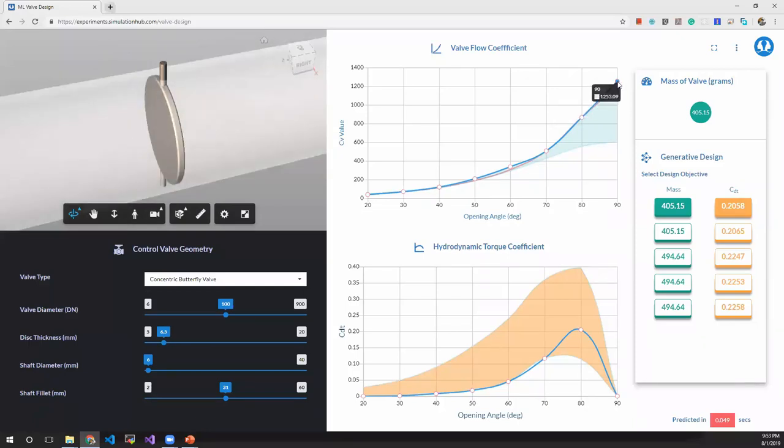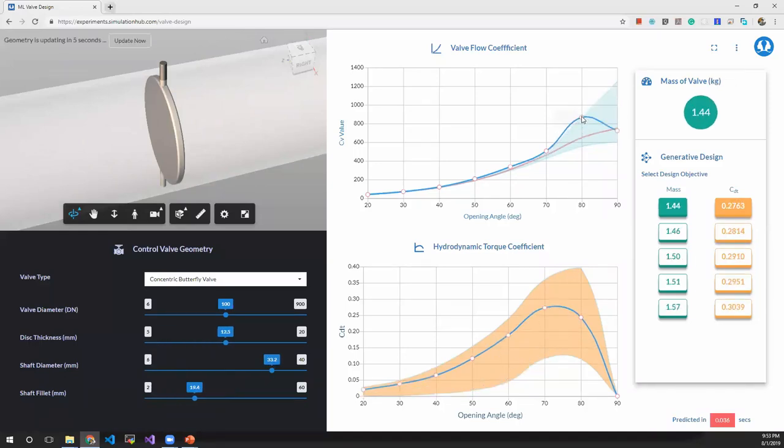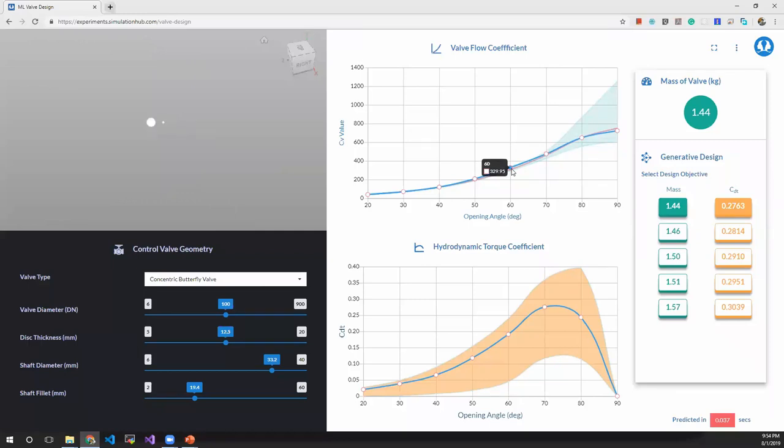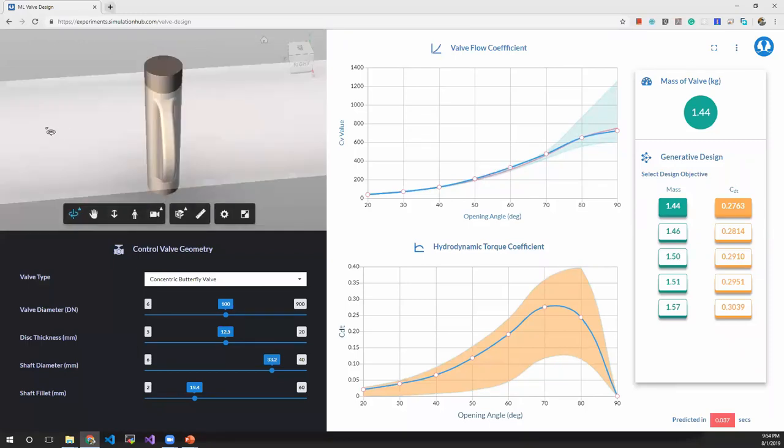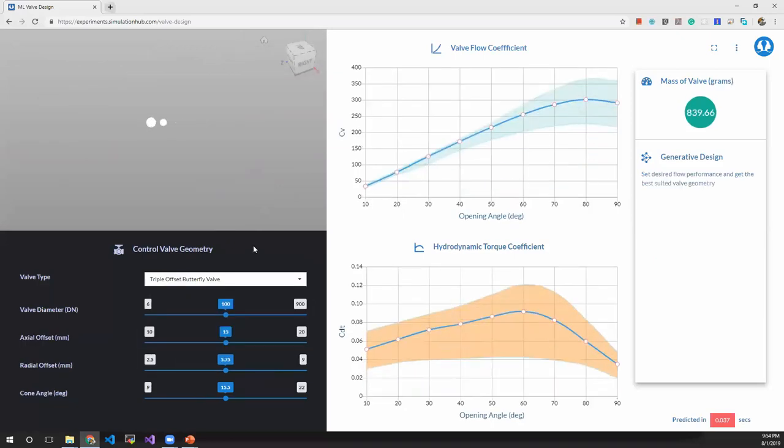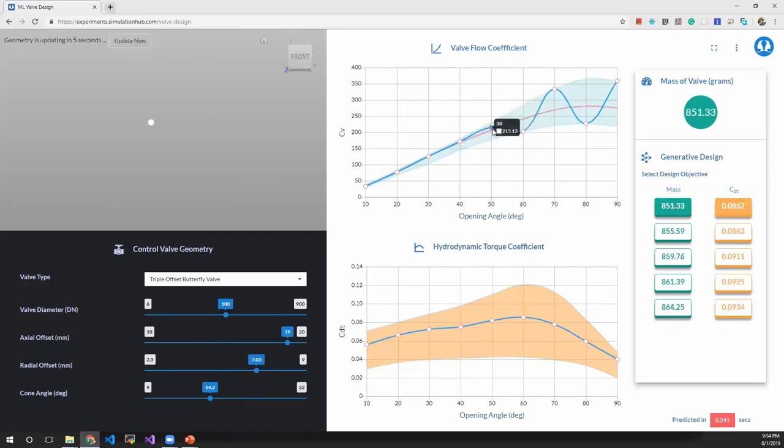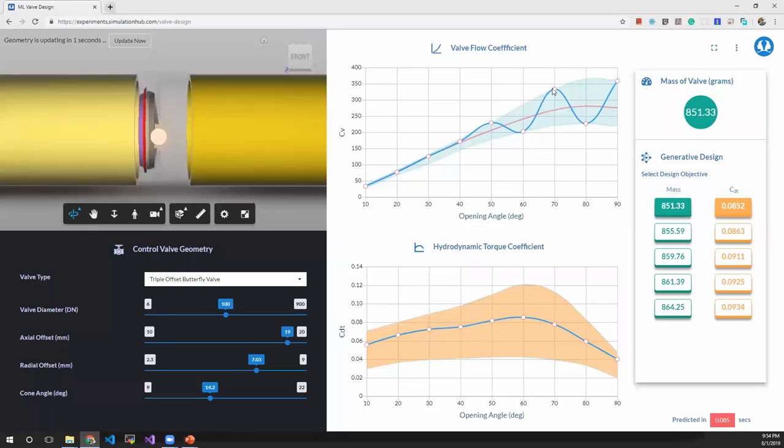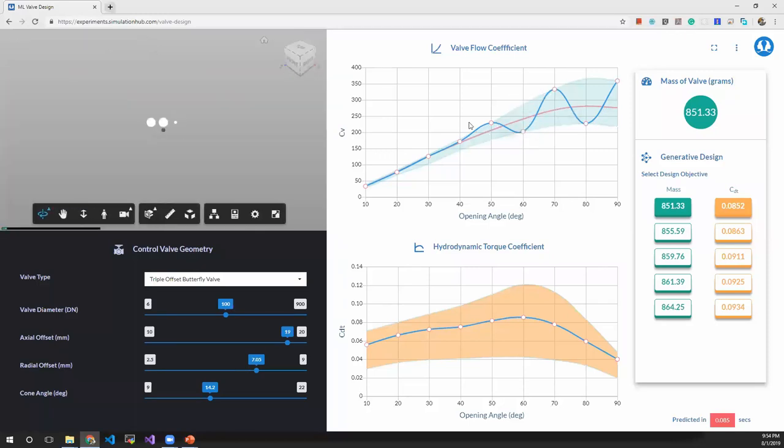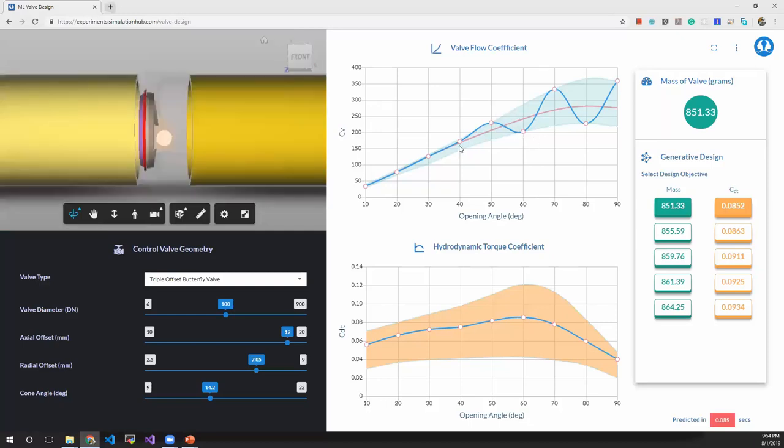If I go for a more interesting Cv profile, more realistic one, then we would get a different valve design. You would be wondering what happens if I give some desired Cv values which are not feasible or not realistic to manufacture. What our model is doing is it's understanding that it is not feasible and it's giving a best fitting curve out of the blue line I expected. It's showing a red line, which is the actual Cv for the calculated design that will give me best fitting results.